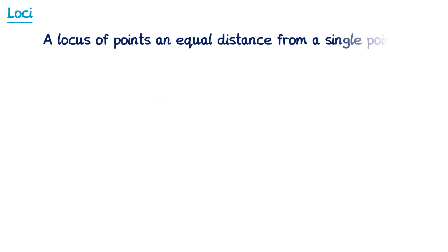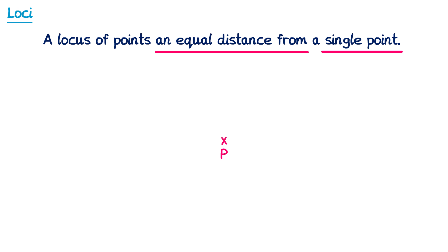The first locus we're going to look at is a locus of points that are an equal distance from a single point. A locus is just a set of points that follow the same rule, so the rule this time is they must be an equal distance from a single point. We'll start with a single point and call it point P. Normally this equal distance will be given to you in the question — for example, let's say it's 4cm.